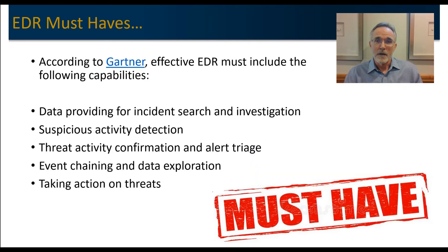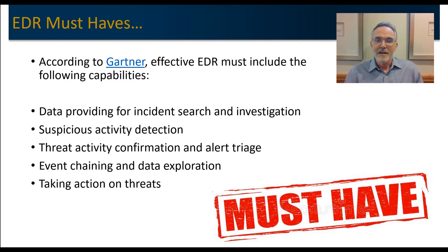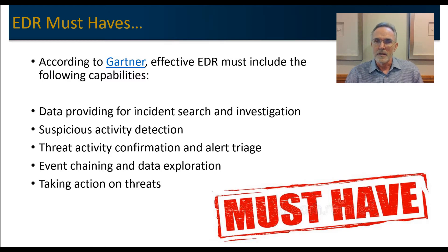So what are EDR must-haves? Gartner defined some key components a couple of years ago. This list is a little dated, but let's start with it as a baseline. Gartner says that an EDR has to provide data for incident search and investigation. It also needs to identify suspicious activity — that's kind of the core capability we're hoping for. Threat activity has to be confirmed, and then it has to have some sort of alert triage, meaning how you handle each individual alert type. Event chaining and data exploration are another key element of an EDR, separating it from other endpoint protection services. And then the ability to take action on a threat, which involves automation.